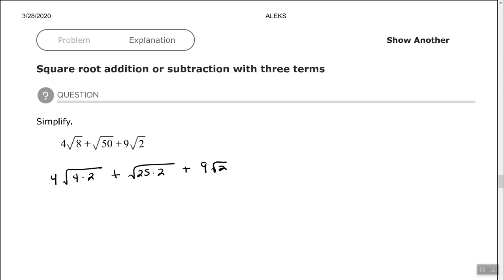So now we can simplify the square root of 4 under the first radical and the square root of 25 underneath the second radical. So the square root of 4 is 2, so 4 times 2 outside of my radical. The square root of 25 is 5.